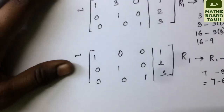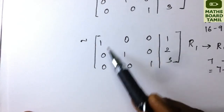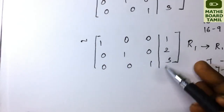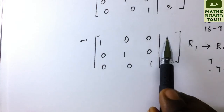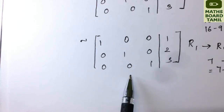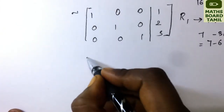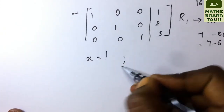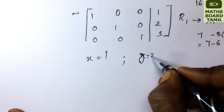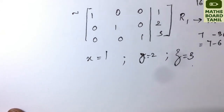Now we have the diagonal matrix with 1s on the diagonal and 0s elsewhere. Reading off the solution: 1·x = 1, 1·y = 2, 1·z = 3, giving us x = 1, y = 2, z = 3.